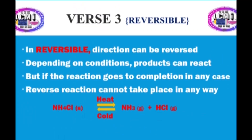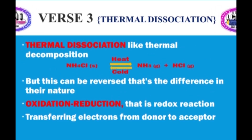In reversible reactions, the direction can be reversed depending on conditions — products can react back. But if the reaction goes to completion, the reverse reaction cannot take place. Thermal dissociation is like thermal decomposition, but it can be reversed — that is the difference in their nature.